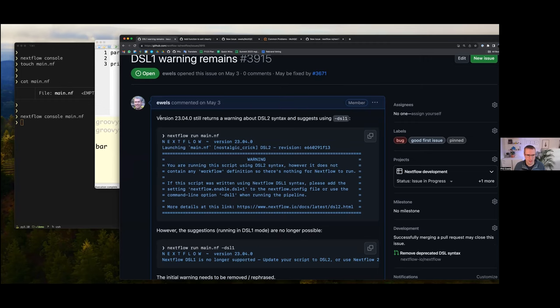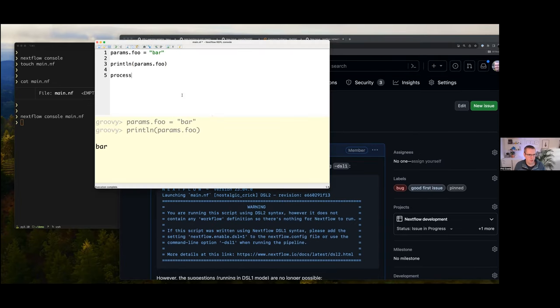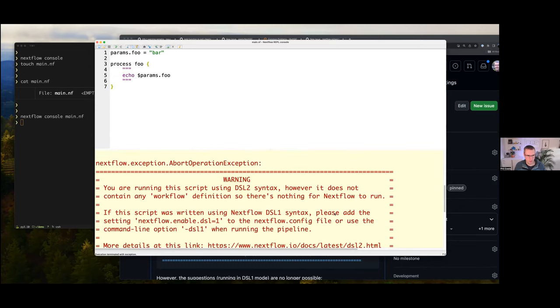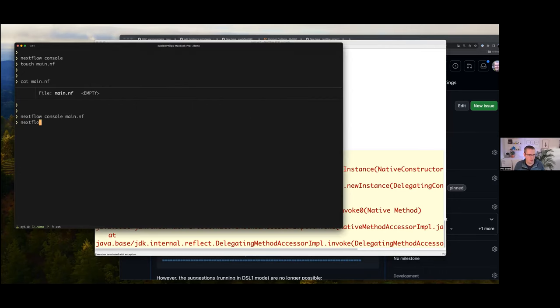So in this particular example here, I said that version 23.04 still returns a warning about DSL2 syntax and suggests using minus DSL1, and that doesn't exist anymore in this version of Nextflow, so we should probably remove that. So the way I saw this was in a DSL1 pipeline, and I had a process block without a Workflow block. So what is the absolute simplest process block I can think of? It's probably something like this, process foo, right? That's about as simple as you get.